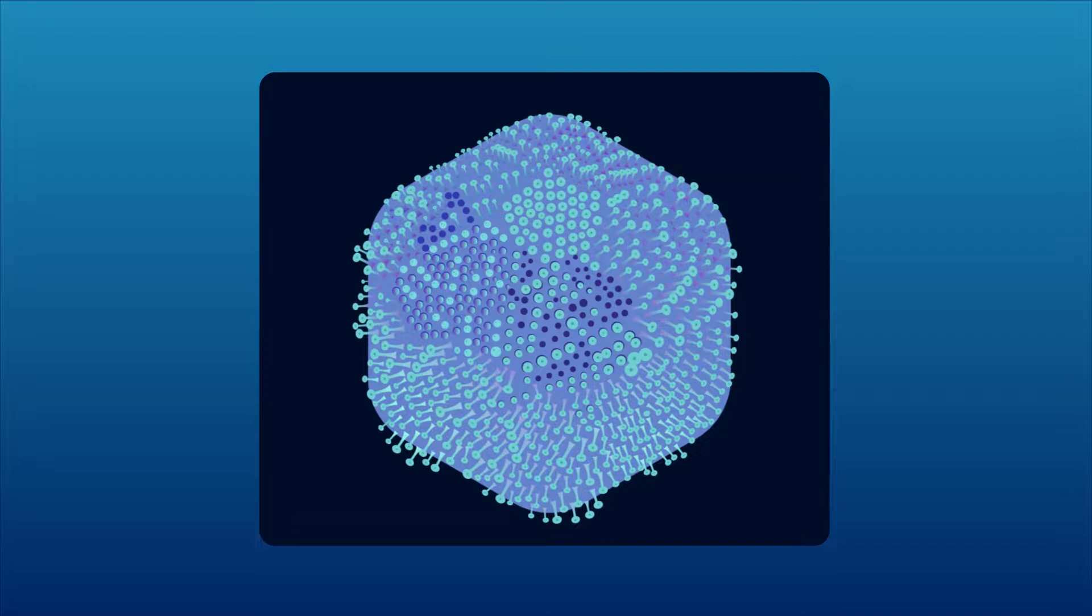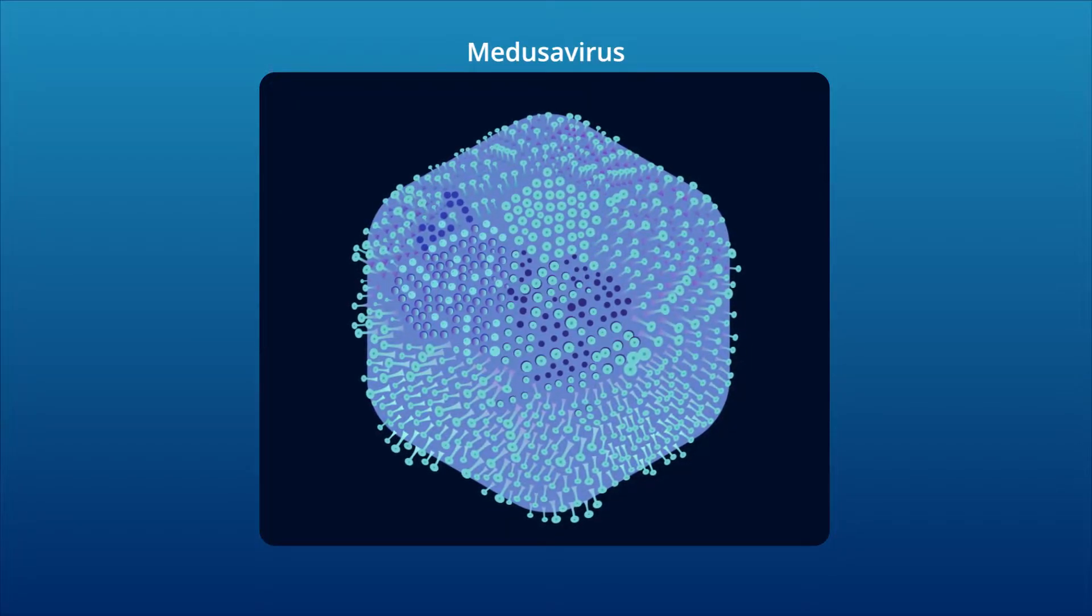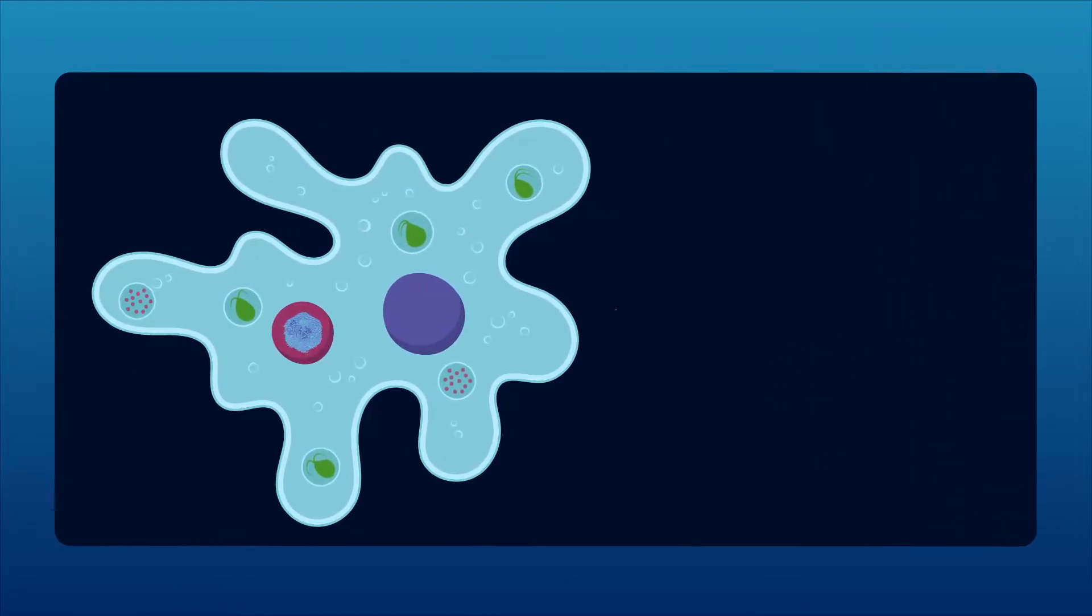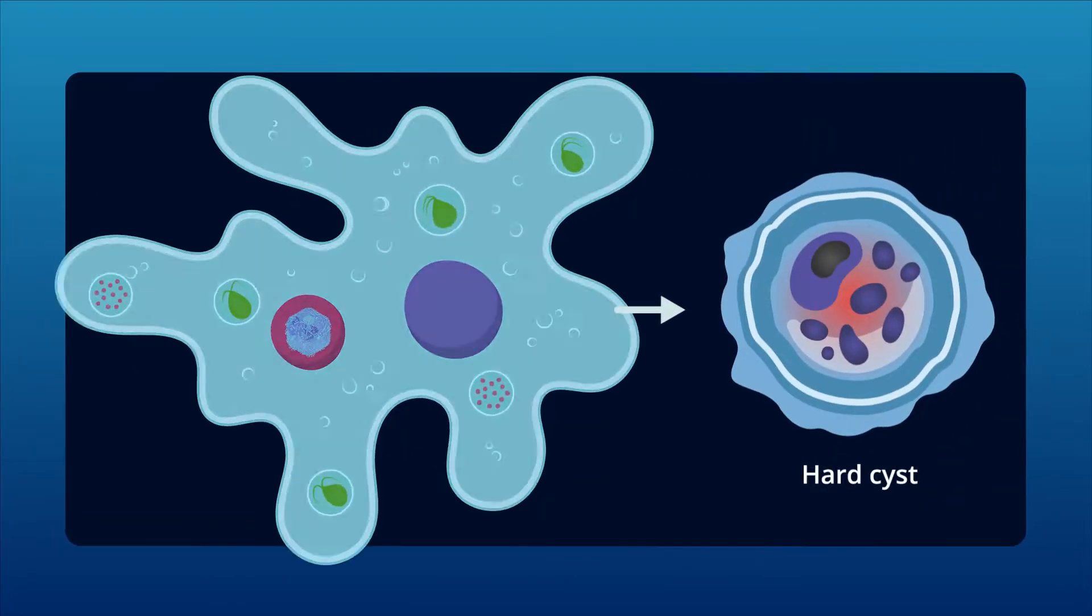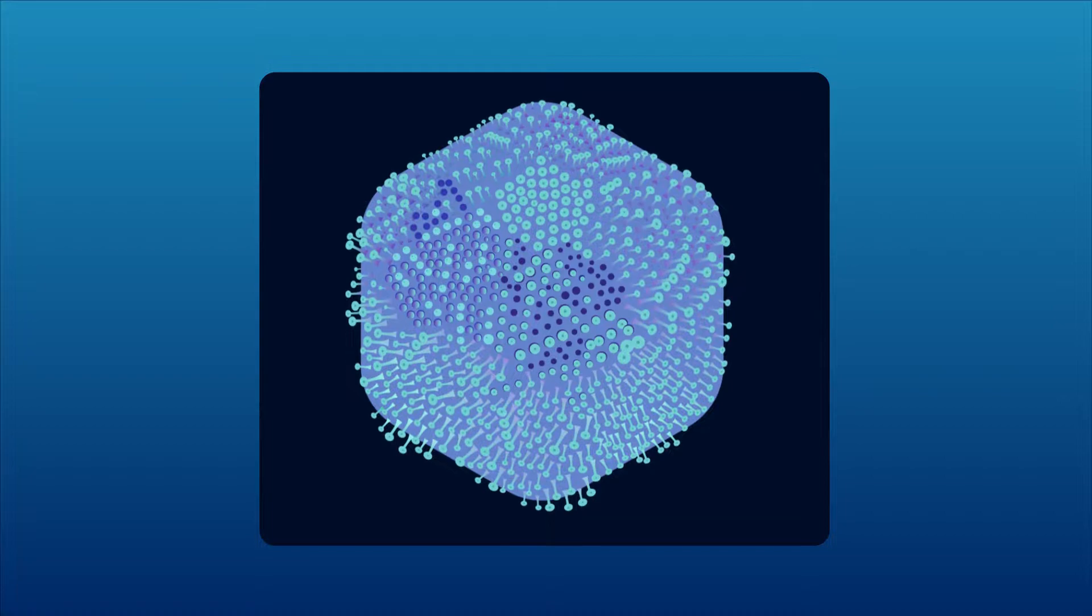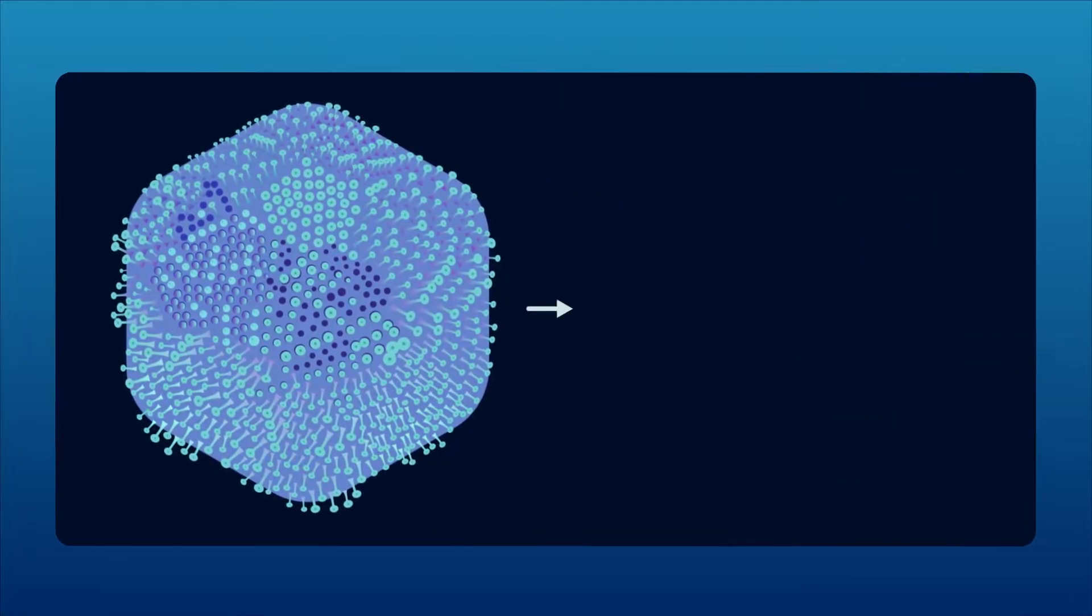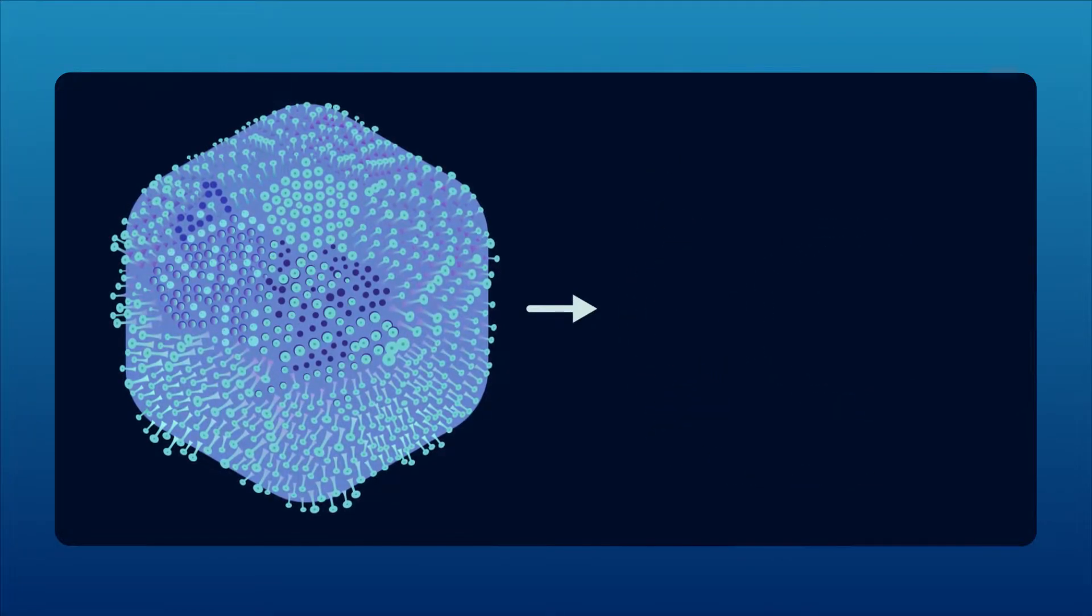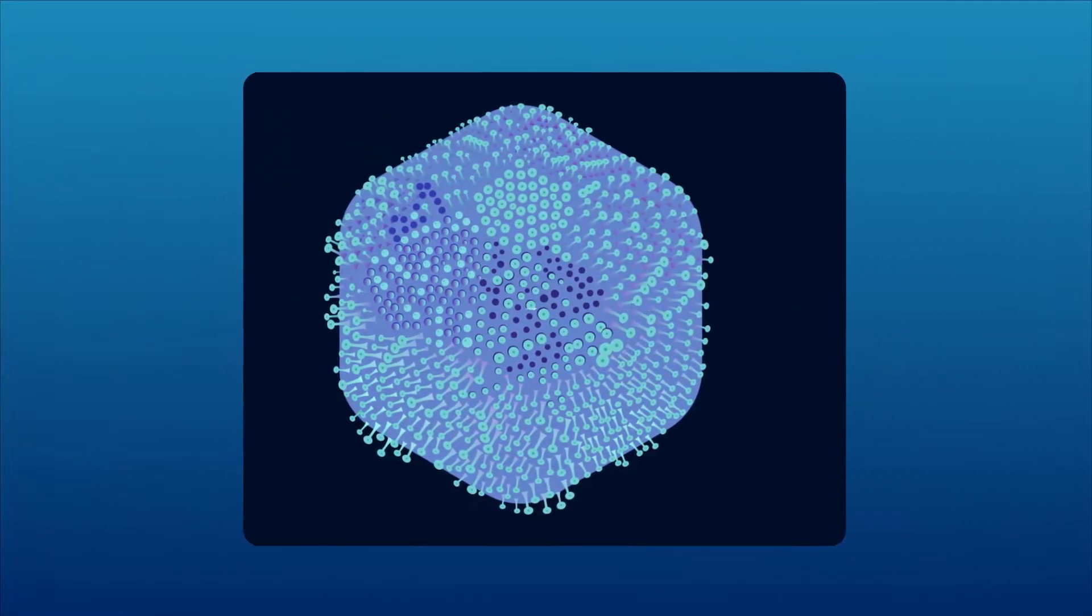Regarded as a giant virus, the Medusa virus derives its name from its ability to convert host amoeba cells into hard cysts. Curiously enough, genetic analyses have suggested that, compared to other giant viruses, the Medusa virus is closer to eukaryotes.